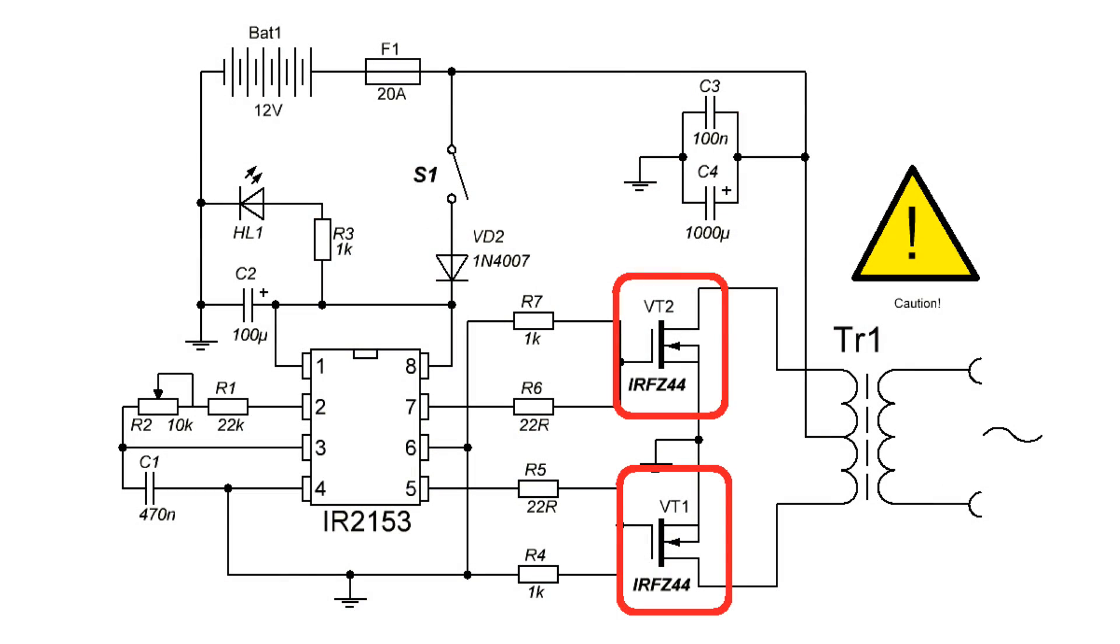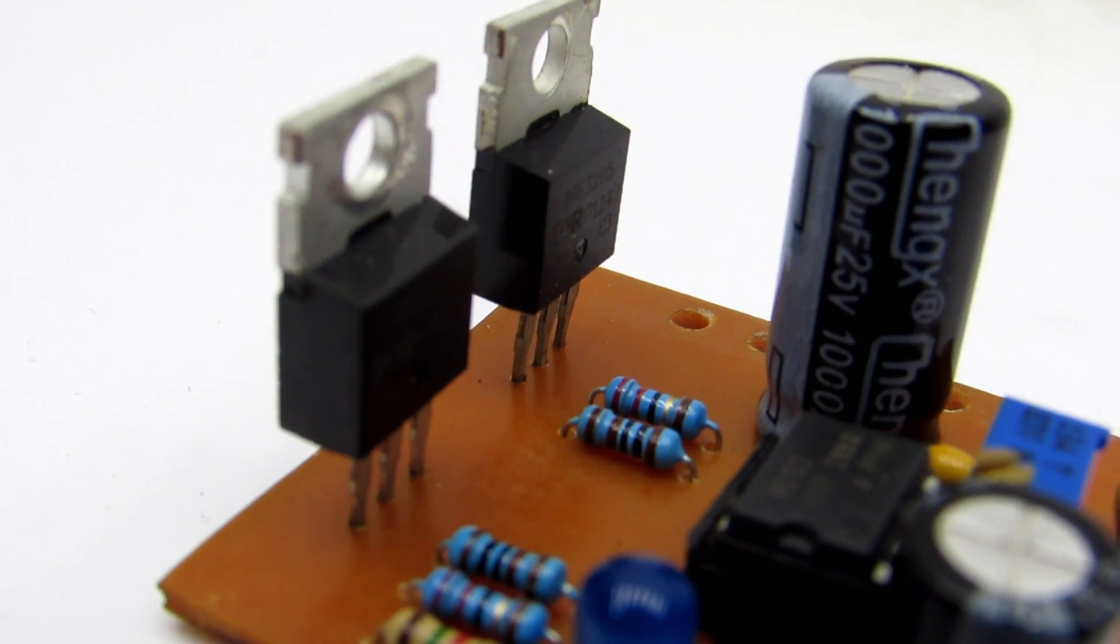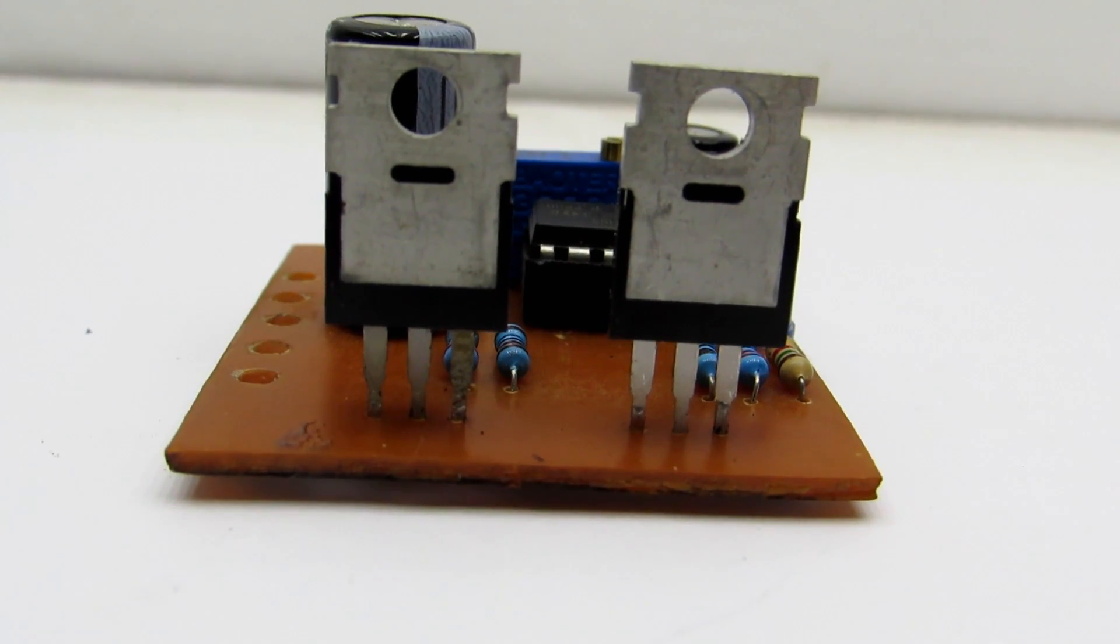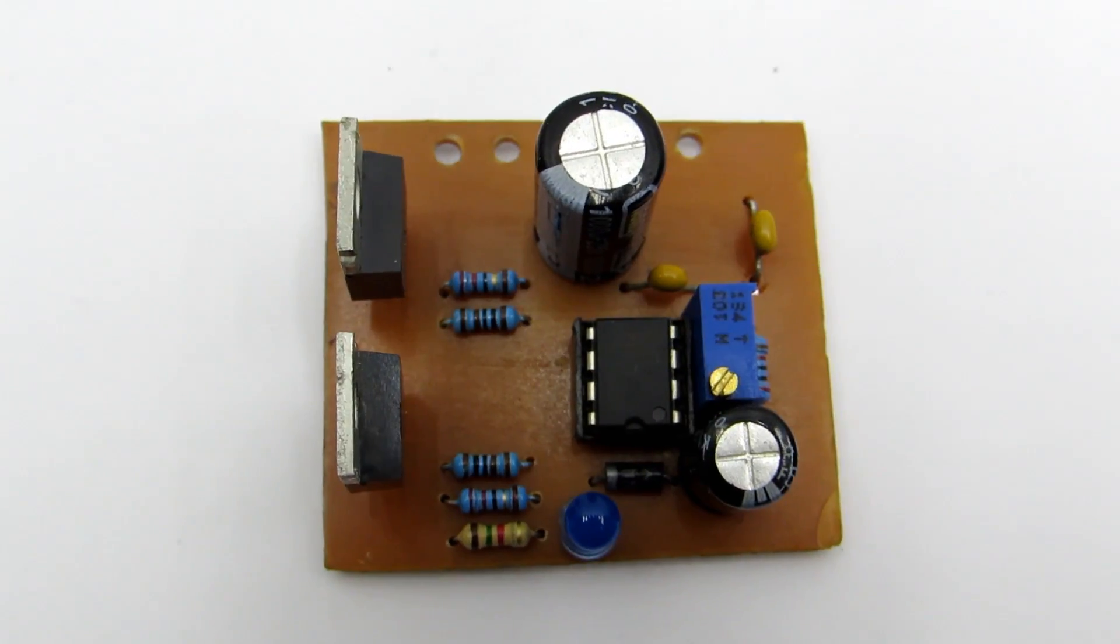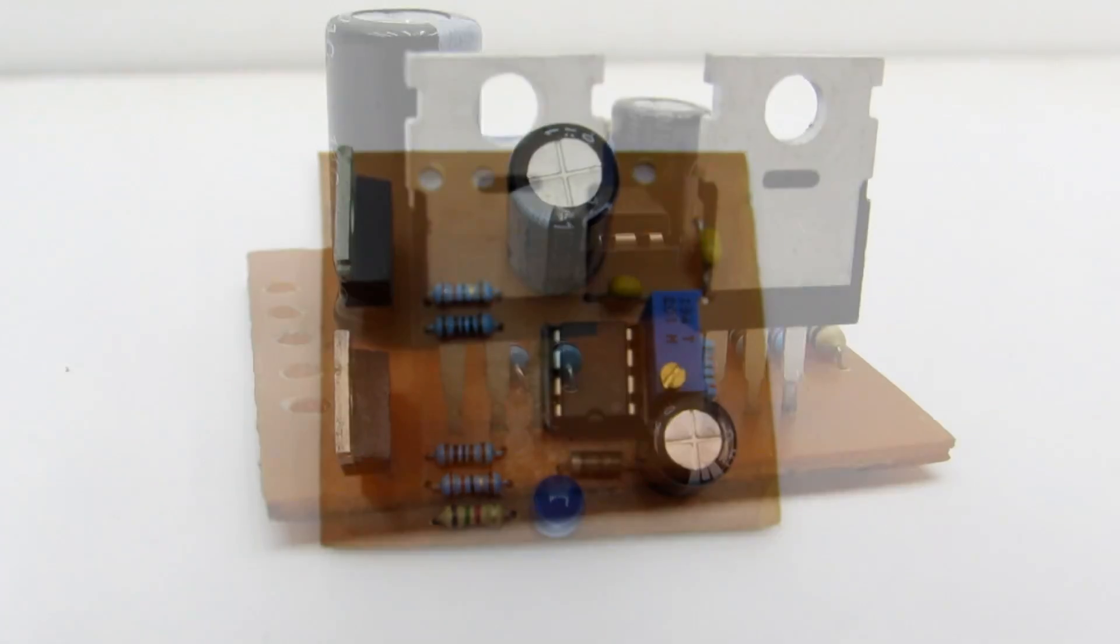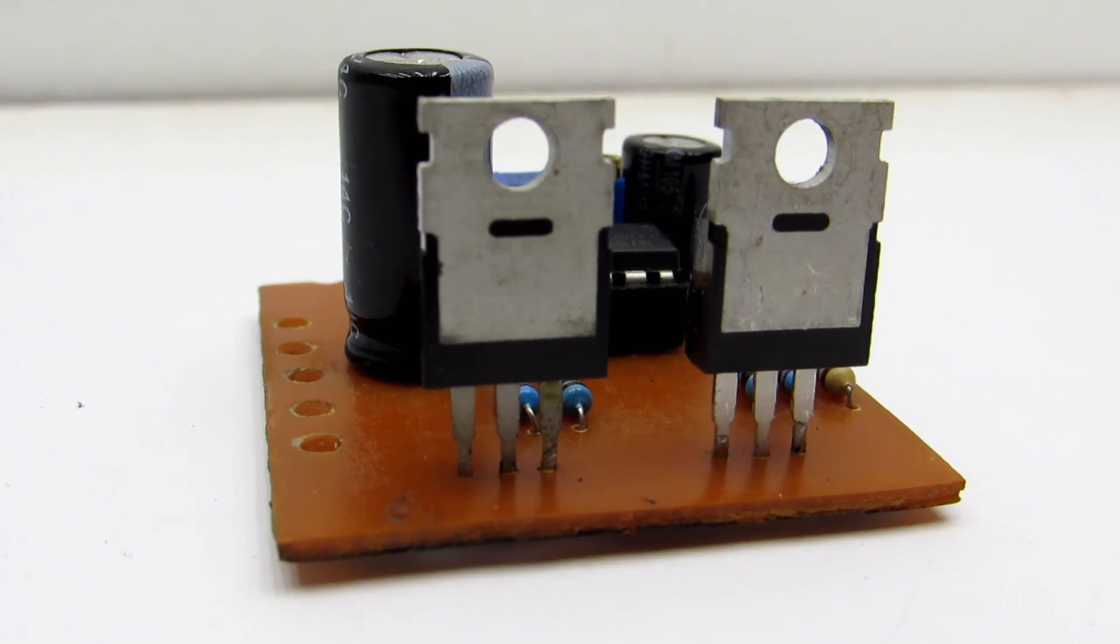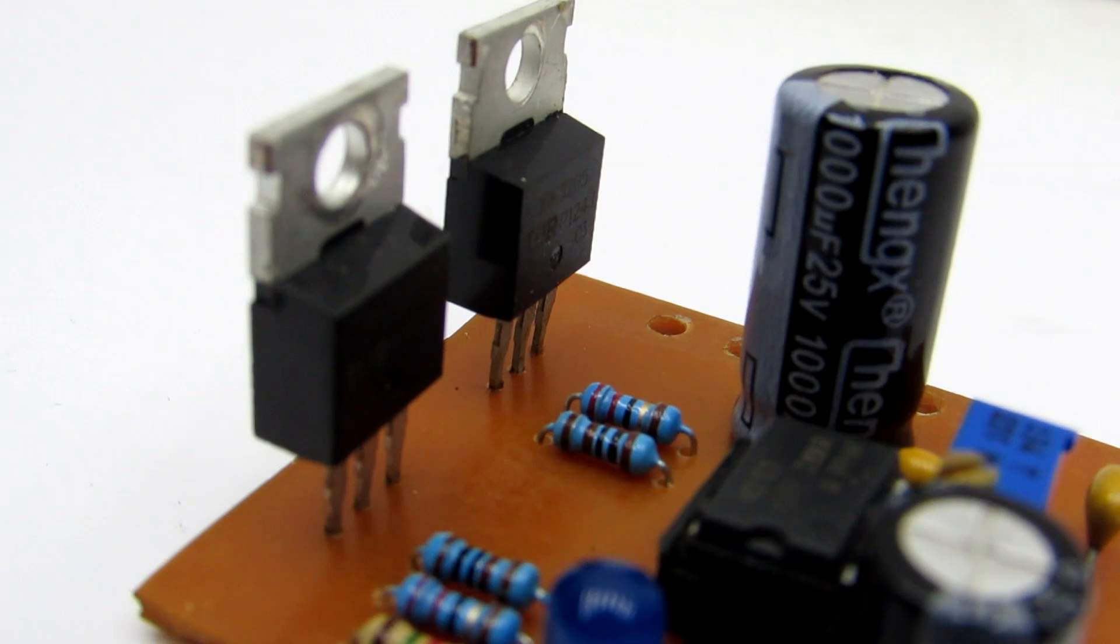Power FETs IFRZ44 could be replaced by the IRF3205. Transistors should definitely be installed on radiators. When using a common heat sink, transistors have to be isolated from each other and from the radiator.